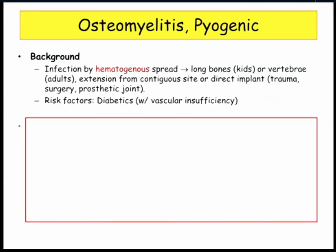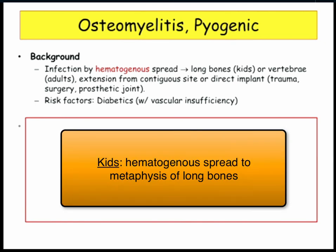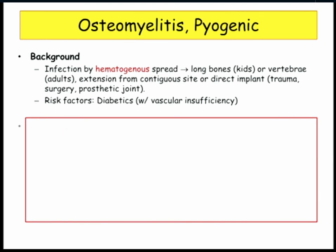So we'll go to osteomyelitis. Big ticket item: hematogenous spread, and you need to know where it spreads. The majority, certainly in kids, are to the long bones, to the metaphysis. In adults, vertebral bodies — like urine, spreads right back to the vertebrae.